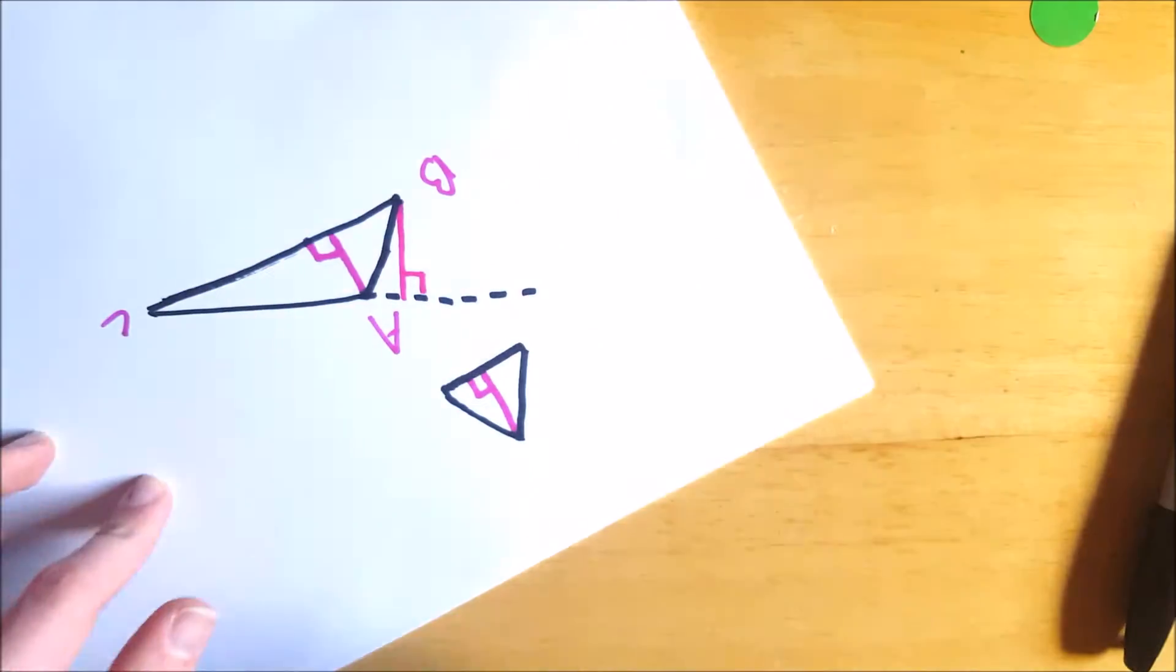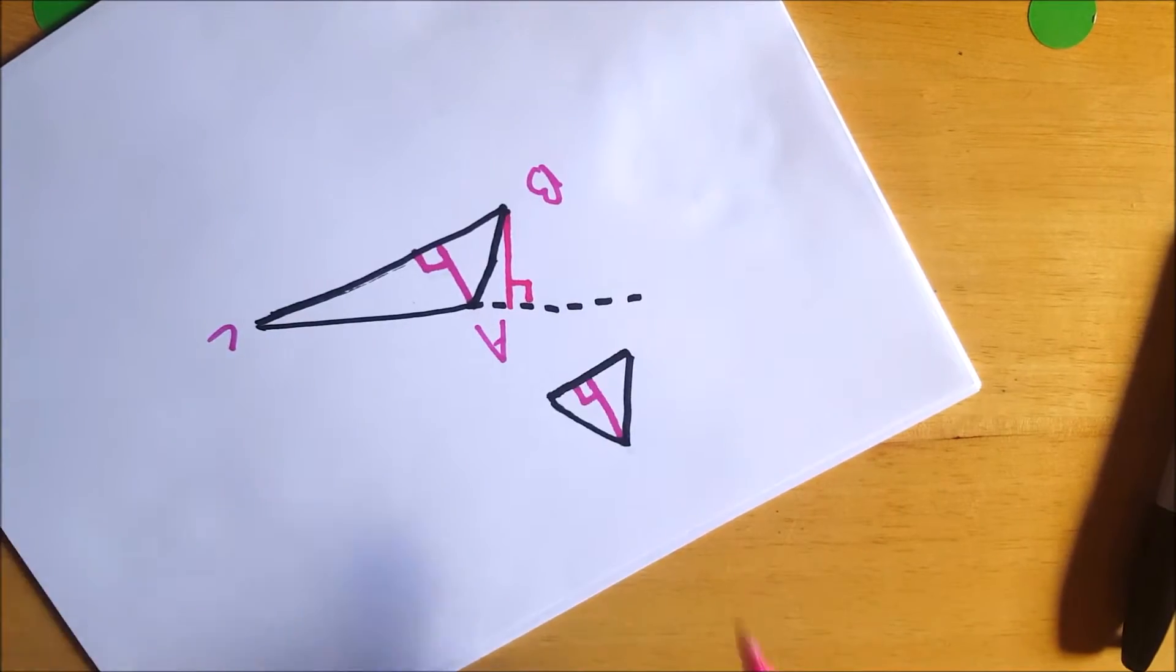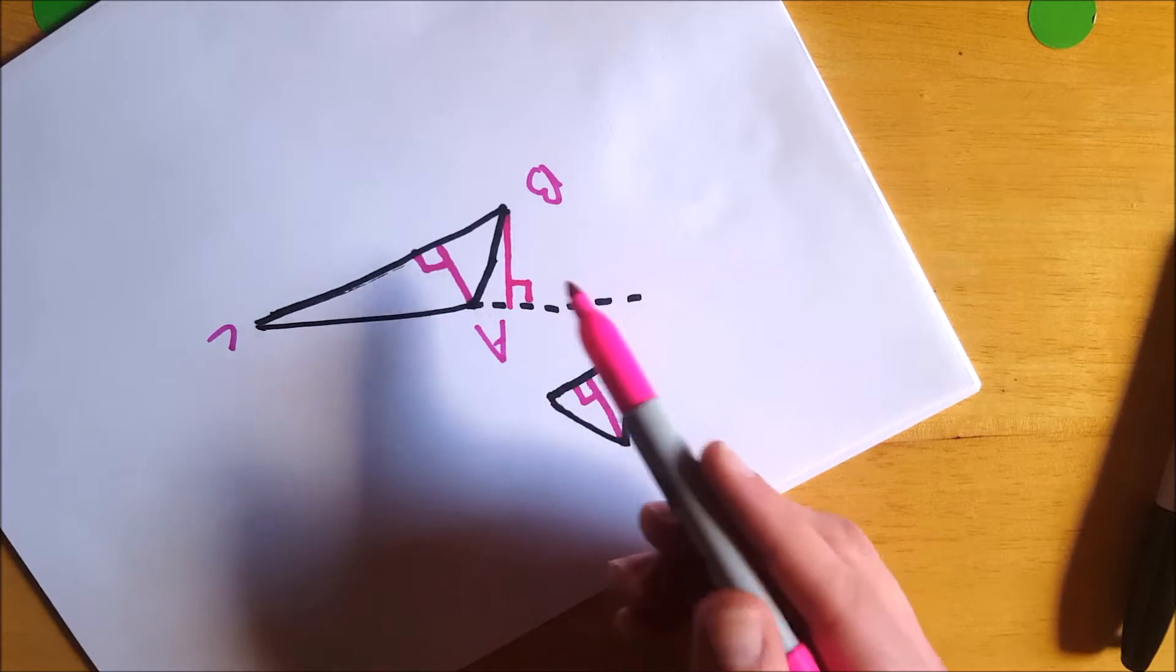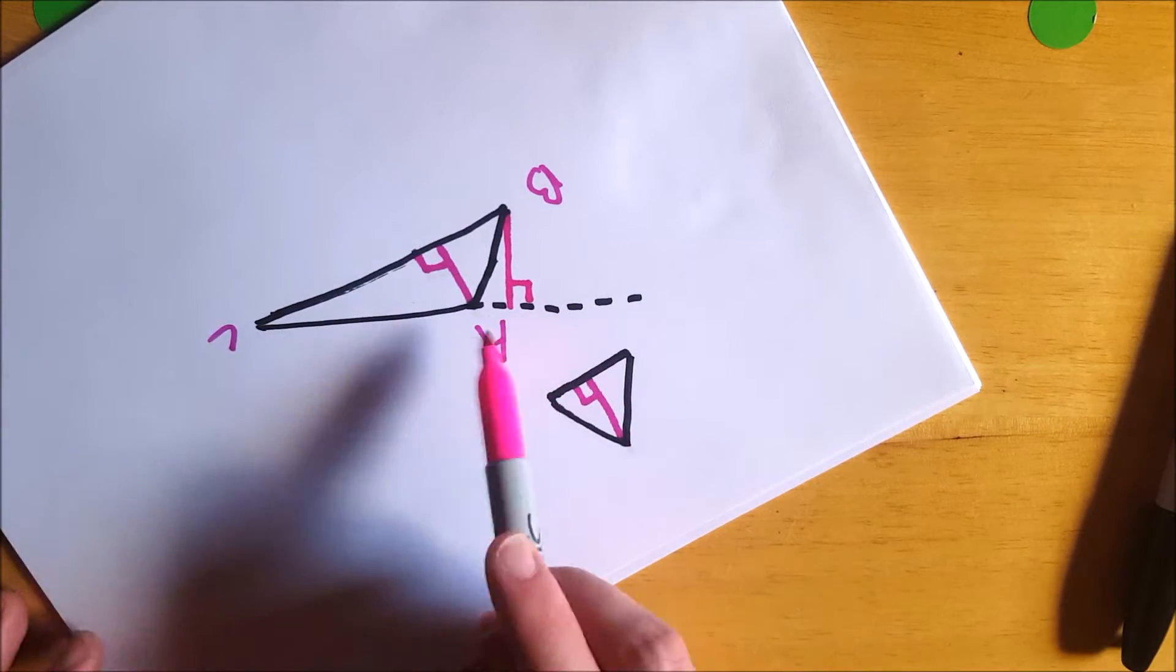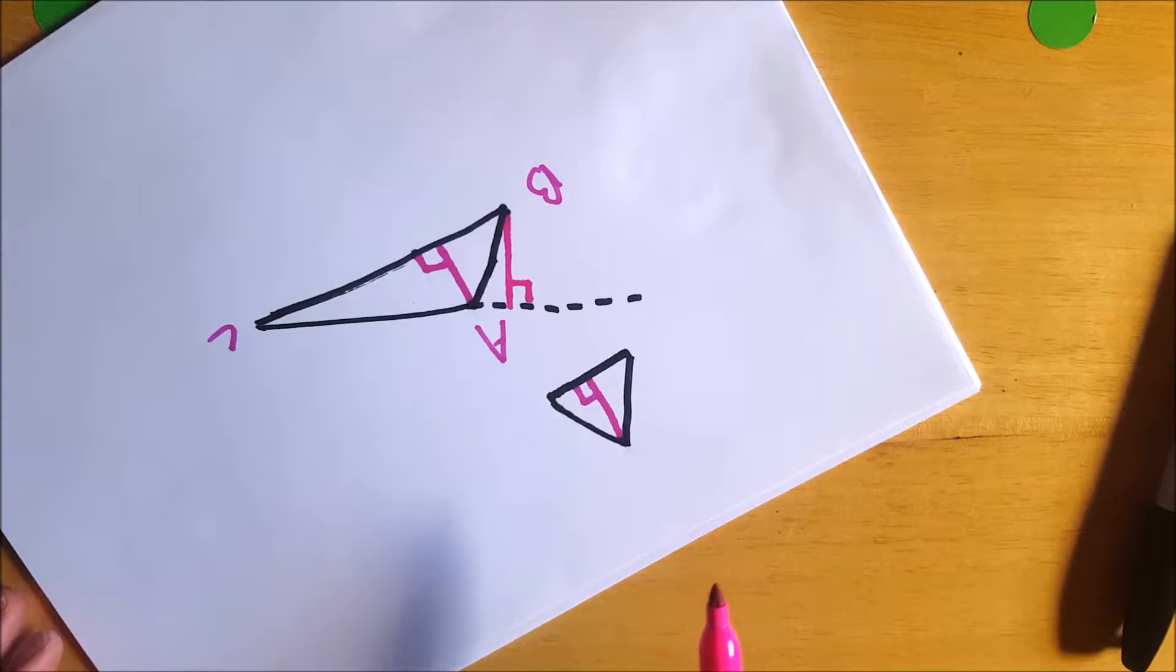So you can see in an obtuse triangle, if we're dropping the altitude from an acute angle, it's going to land outside the triangle and intersect the line containing the opposite side.